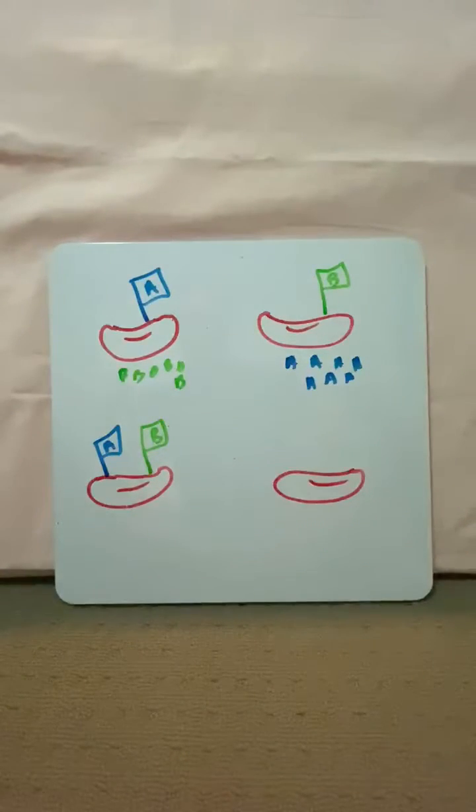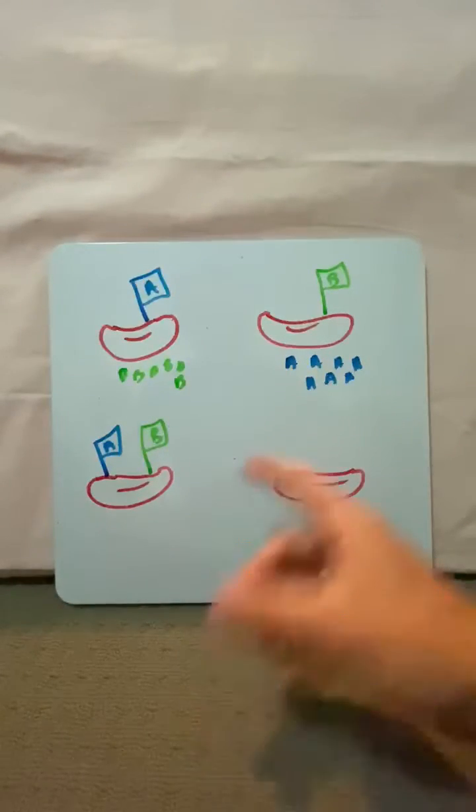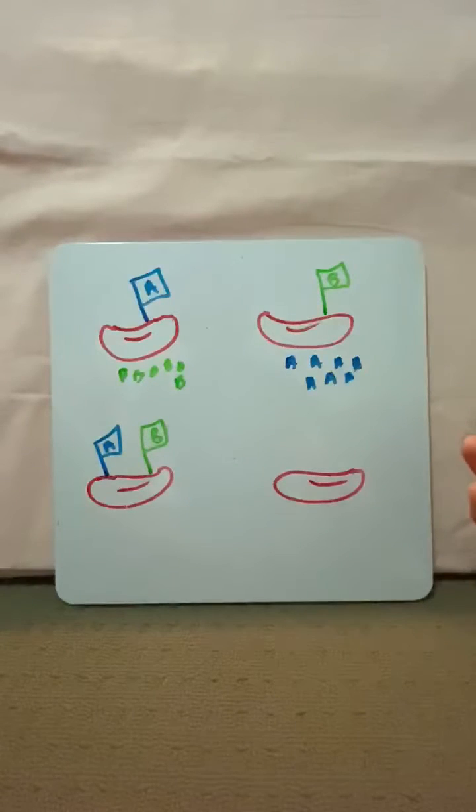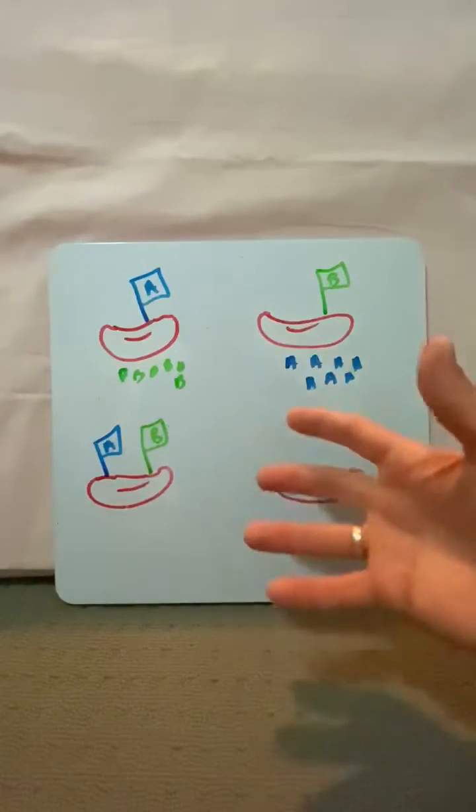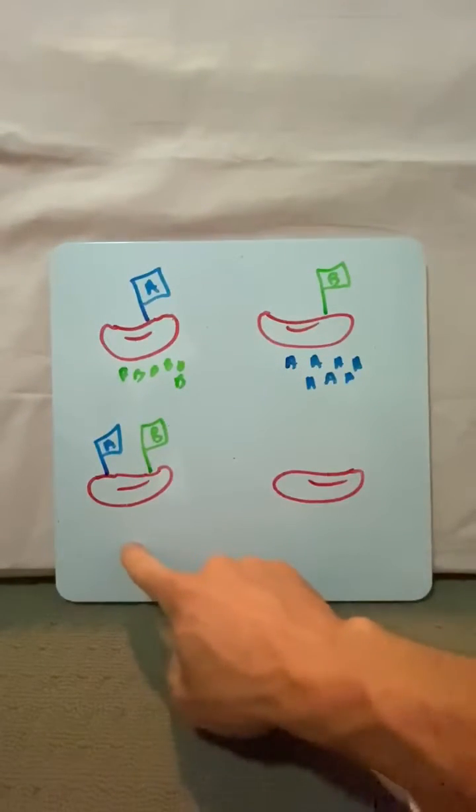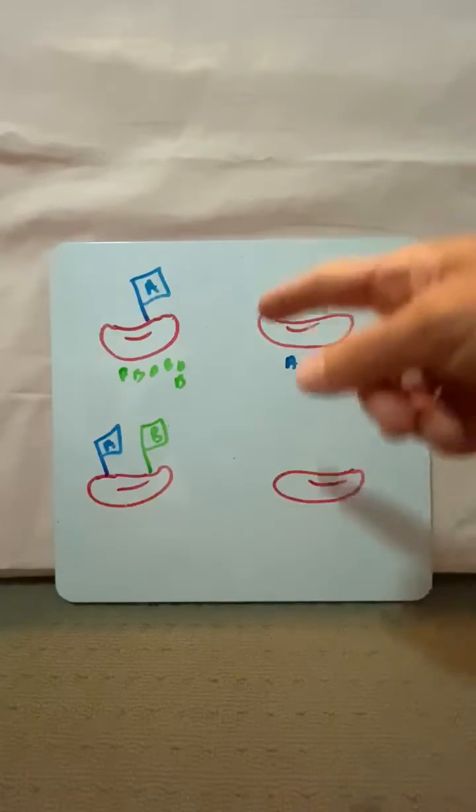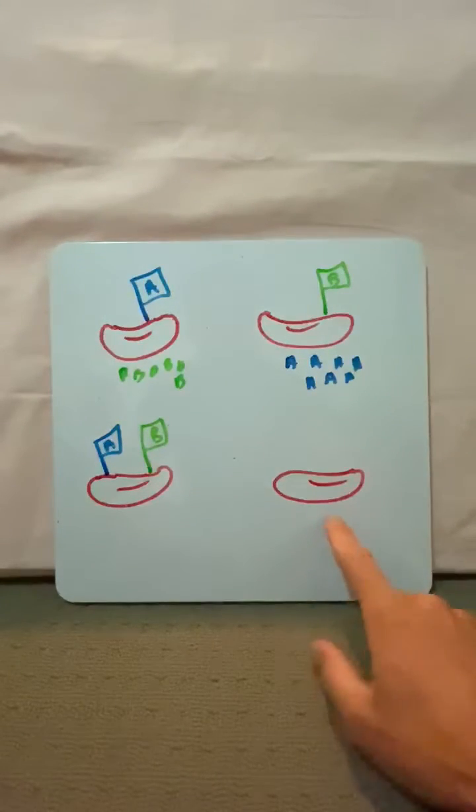If you're type AB, well, your army isn't going to be trained against anyone because the only other flags that are available are A and B and you have them. So you don't have any antibodies. So you can receive all blood, A and B.